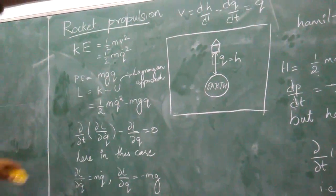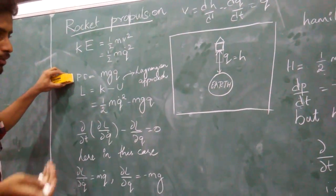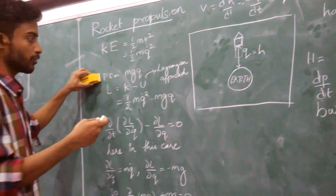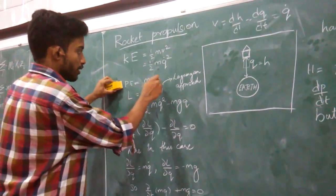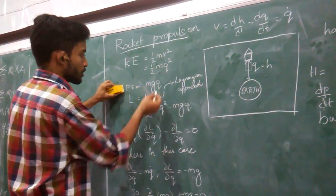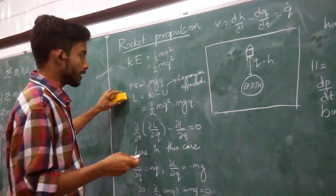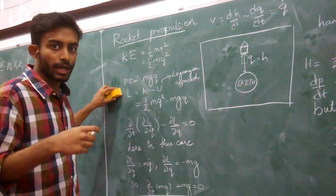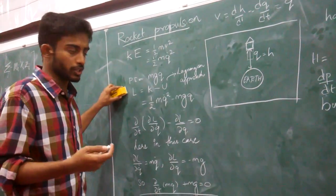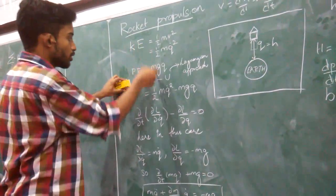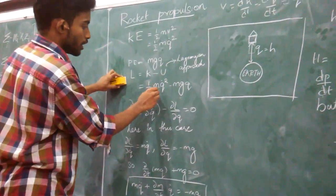In the gravitational field of Earth, the potential energy is V = mgh. Since h = q here, the potential energy is V = mgq. The Lagrangian of the body is kinetic energy minus potential energy, so L = (1/2)m·q̇² - mgq.